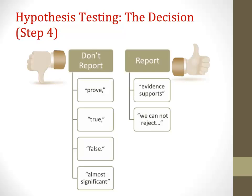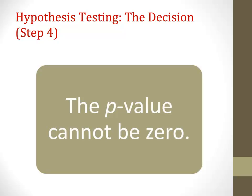A p-value can never be 0. A p-value of 0 would mean it is certain that no type 1 error took place, and inferential statistics is based on probabilities, not certainties. However, when you calculate values in SPSS, you may see a p-value displayed as 0.000, because SPSS truncates values beyond three decimal points. This always needs to be interpreted and reported as p < 0.001.